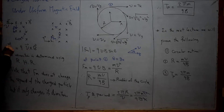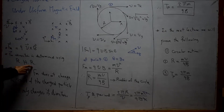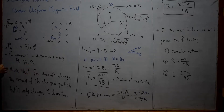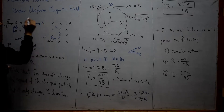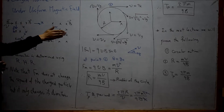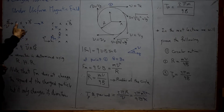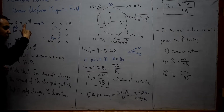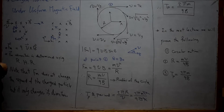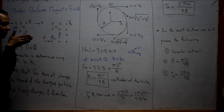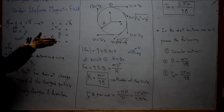To determine the direction of this magnetic force, we apply the right-hand rule. In this case, the velocity vector is in the direction of x, and the magnetic vector is perpendicular to the whiteboard and directed into the whiteboard. So the velocity is in this direction and B is into the board. According to the right-hand rule, we move our hand from V to B.